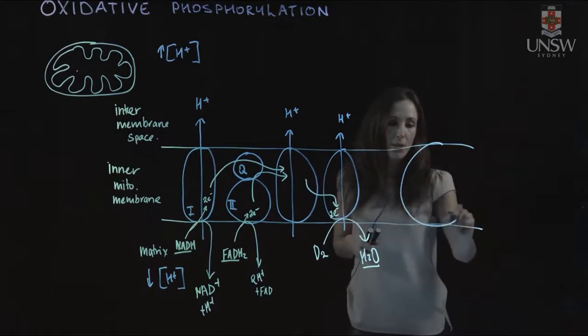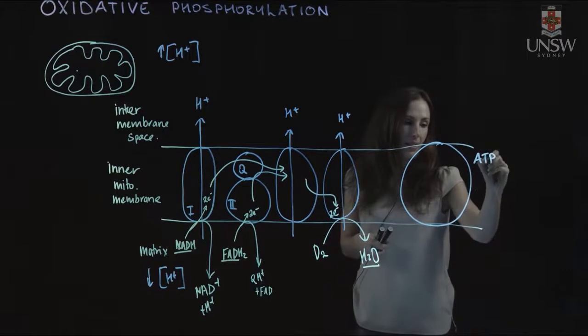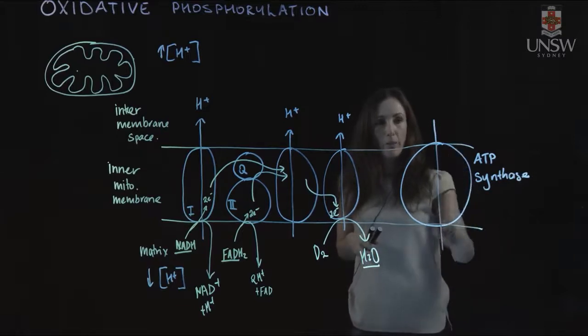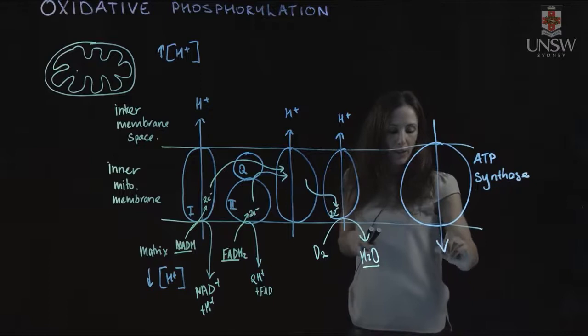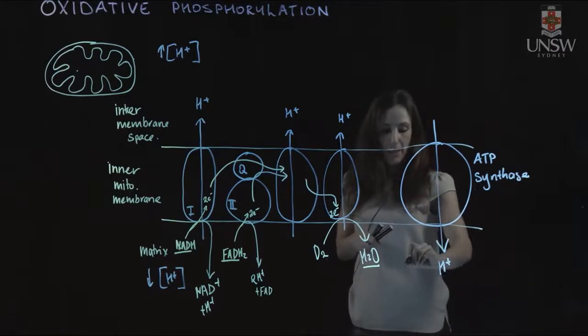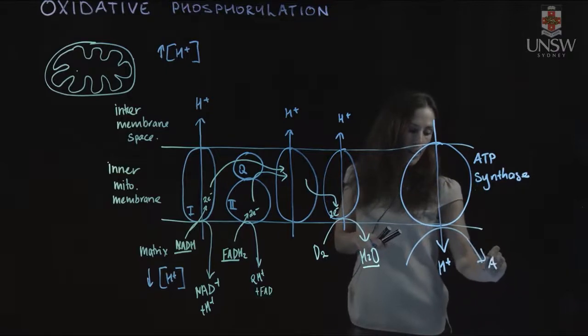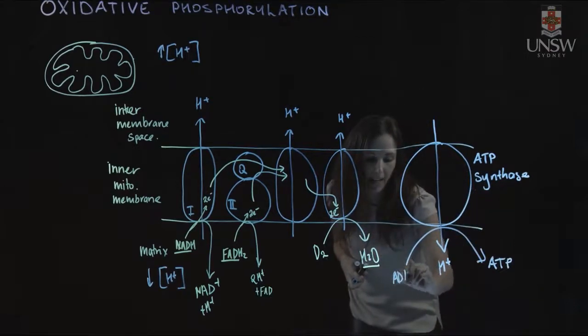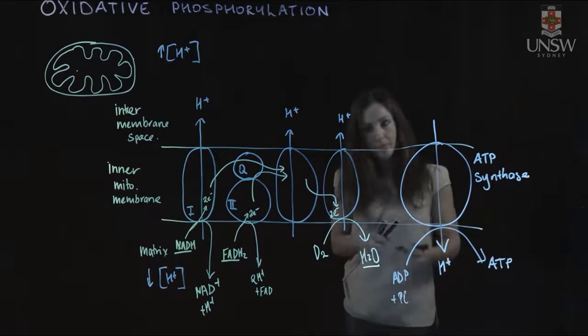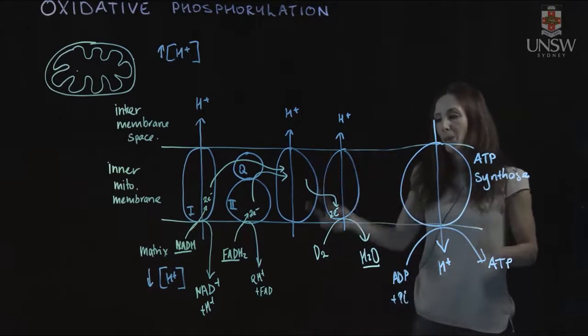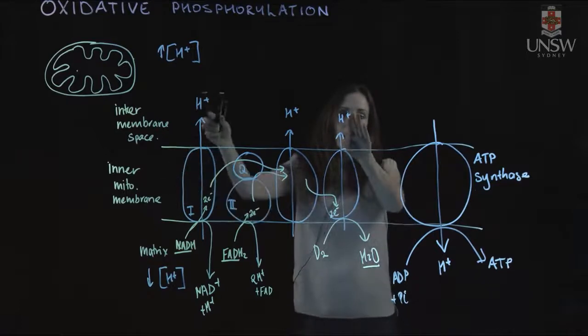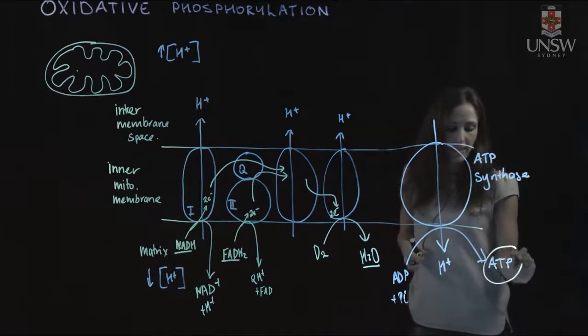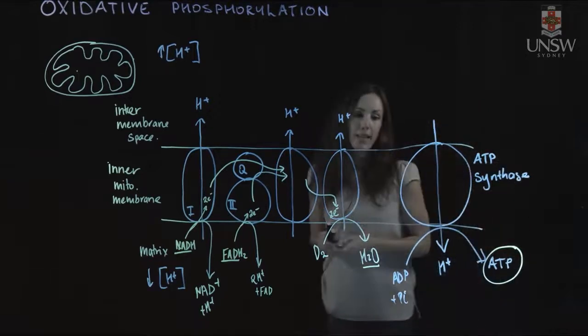This proton gradient drives ATP synthase. Protons flow through ATP synthase from an area of high concentration to an area of low concentration. As this happens, ATP is produced from ADP plus inorganic phosphate. ATP is the currency of the cell used in many reactions. You can see how the reactions are coupled: electron transport creates the high concentration of protons, which then drives ATP synthesis. That's the concept of oxidative phosphorylation.